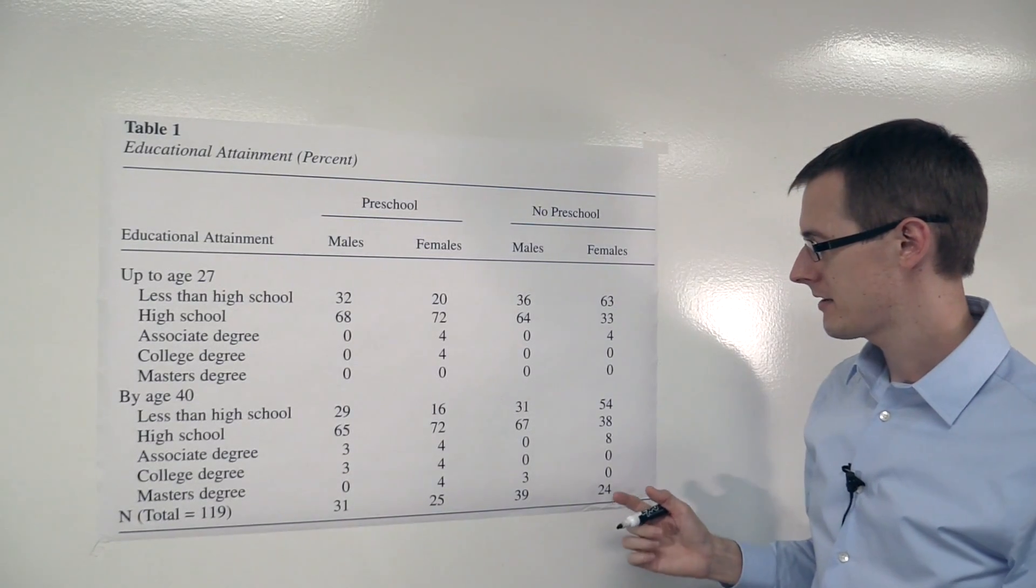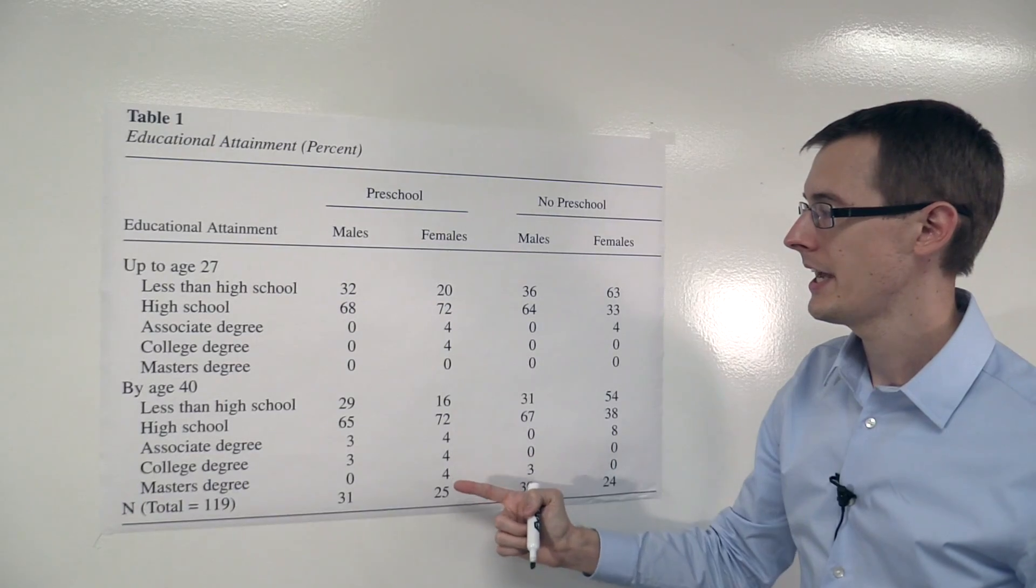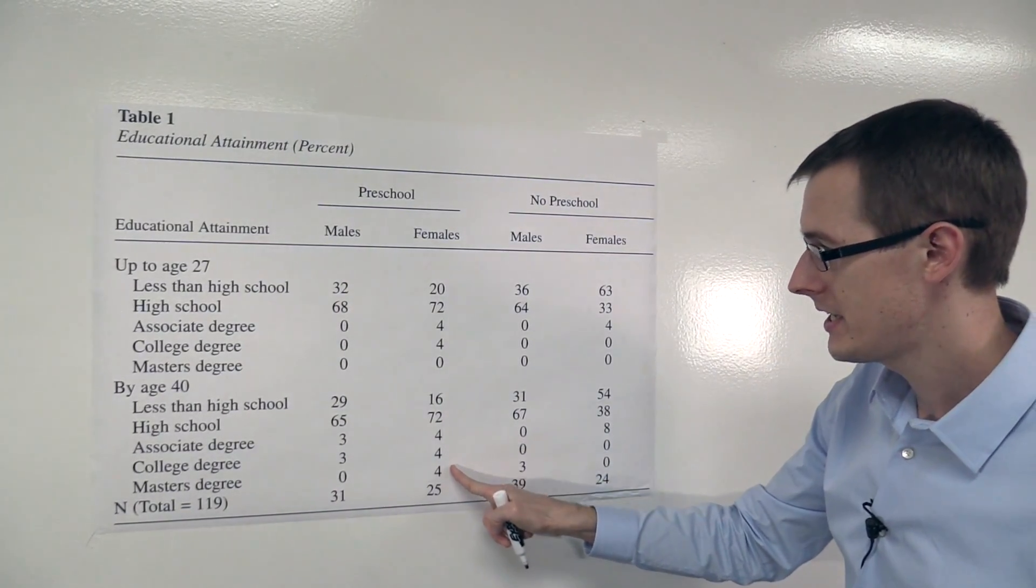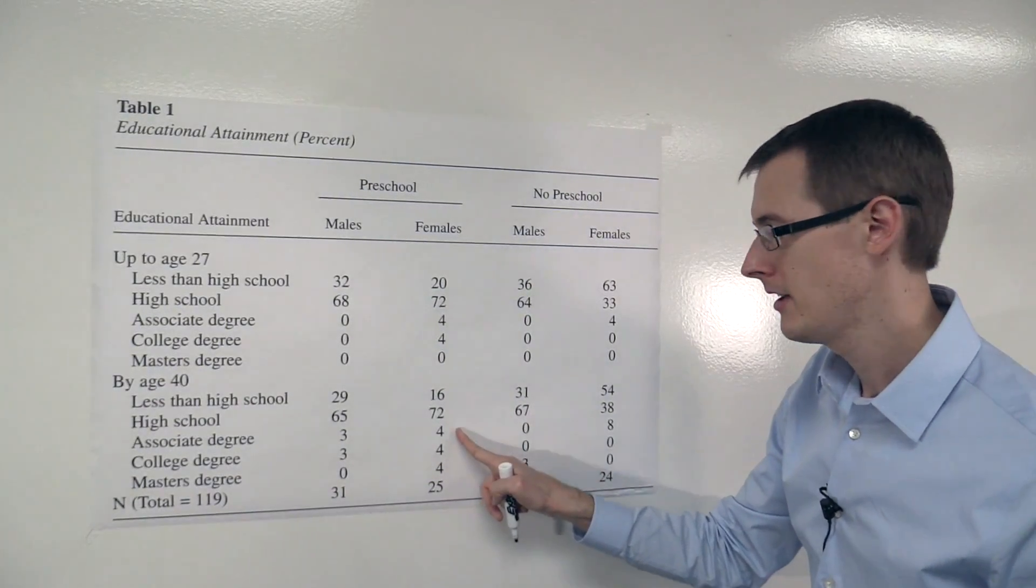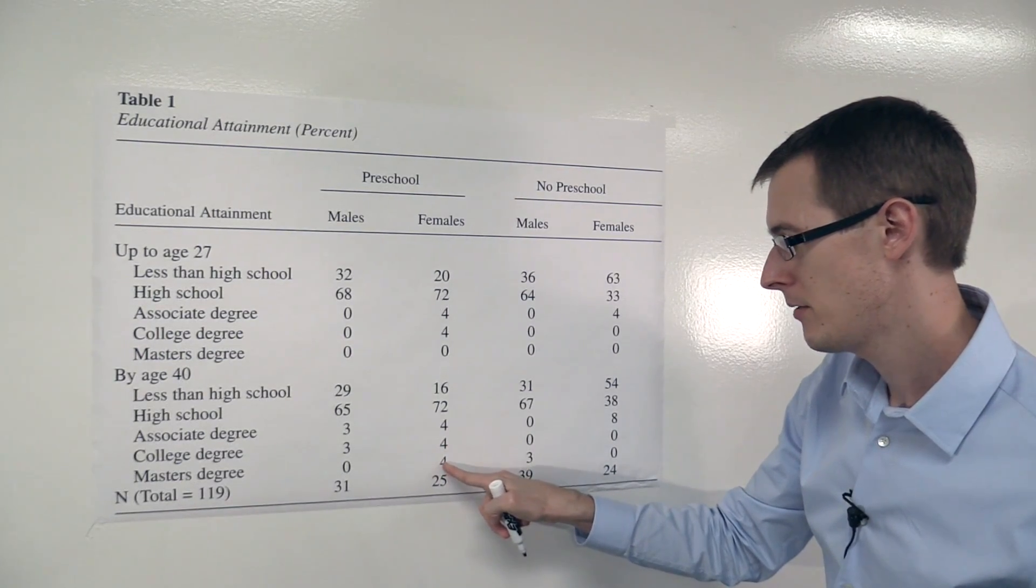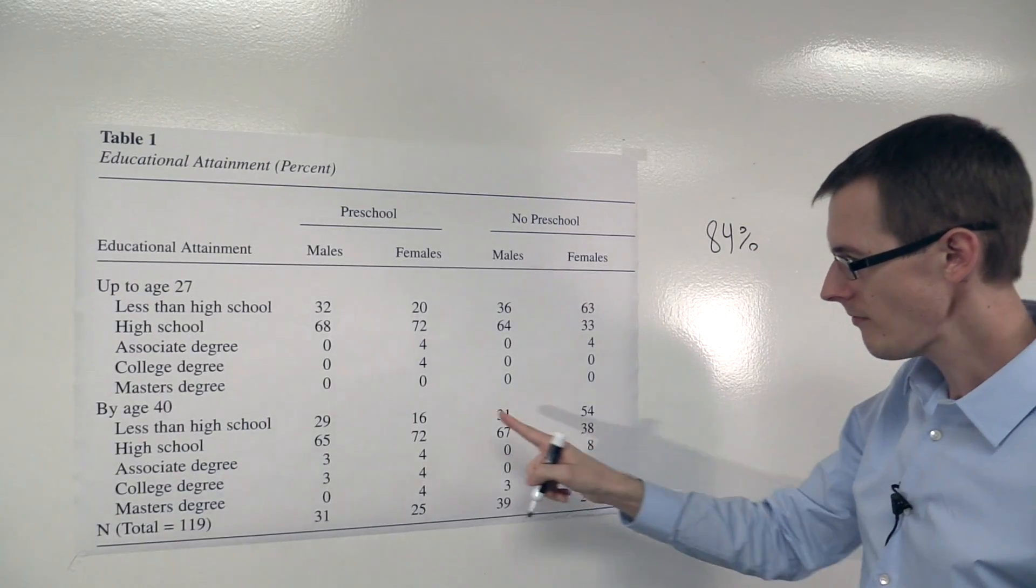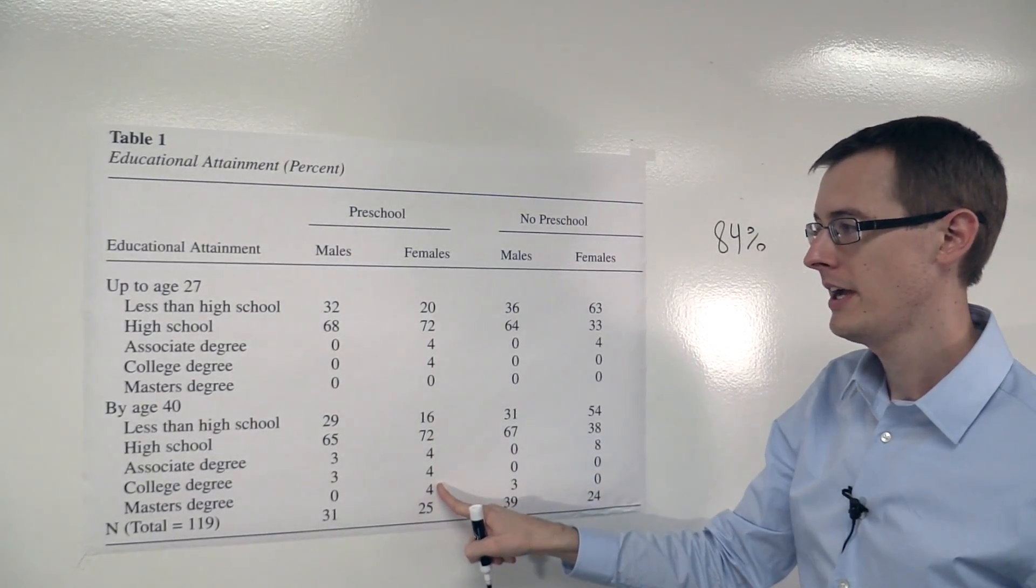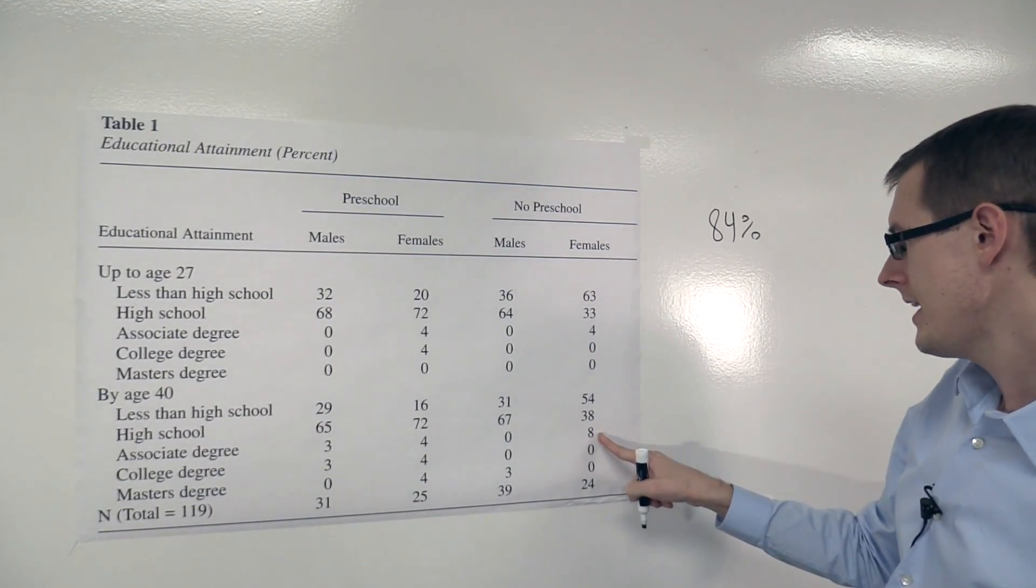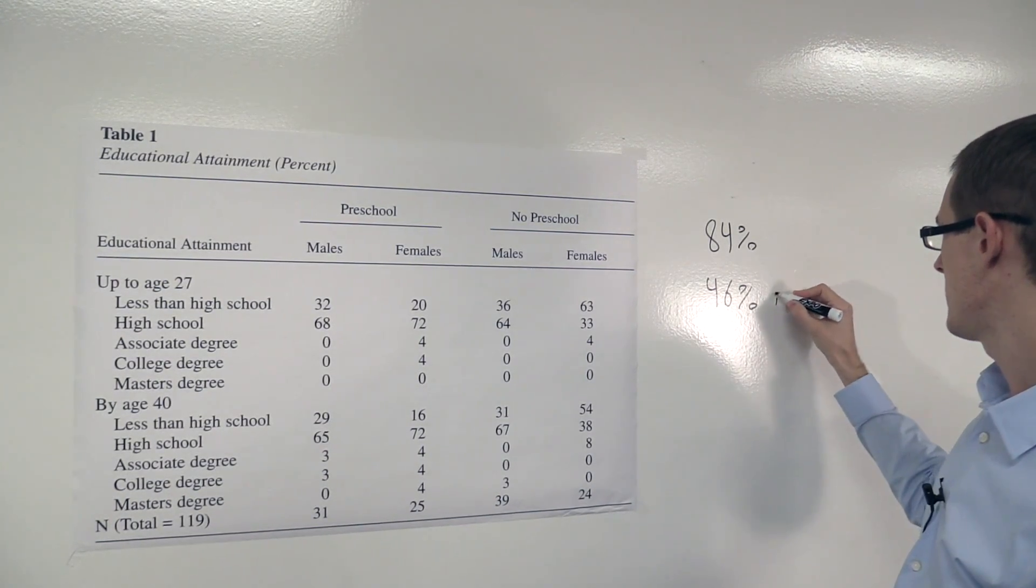So what's the average treatment effect for females of getting preschool on, let's say, whether you have at least a high school education? Well, over here we see from our raw data, we see that 72 plus 4, that's 76, plus 4, that's 80, plus 4, that's 84%. 84% of females in the treatment group had at least high school education. Over here, it's 38 plus 8, so that's 46, versus 46 in control.